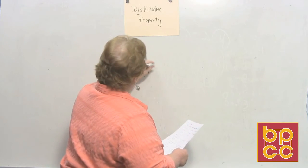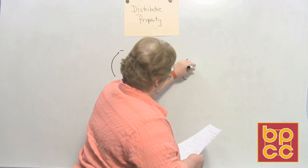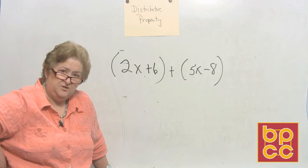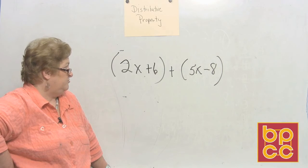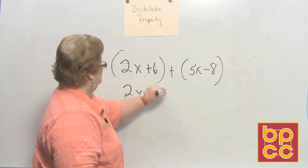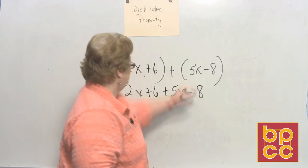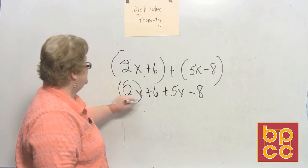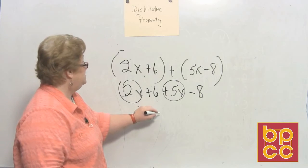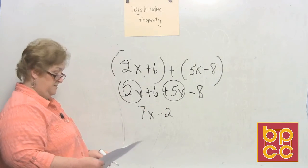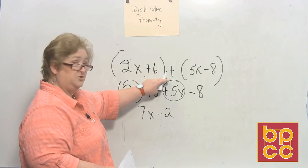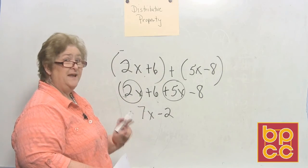We have 2x plus 6 in parentheses, and then 5x minus 8. You're probably looking for some distribution here, but there aren't any numbers to distribute. So I'll just take everything out of parentheses and then combine like terms: 2x plus 6 plus 5x minus 8. Now grab the x's: we have 2x and 5x which make 7x. We have a positive 6 and a negative 8 — there's more negative — so take the difference, that's a negative 2. So 7x minus 2. When there's nothing to distribute and you have a plus sign in the middle, just write everything you see and combine like terms.